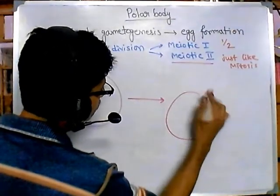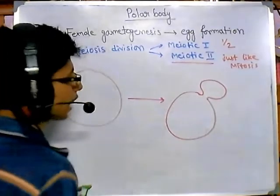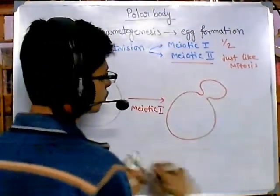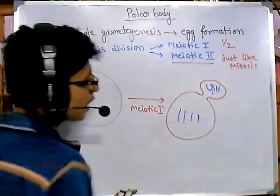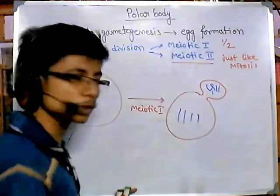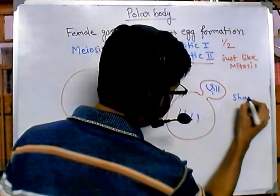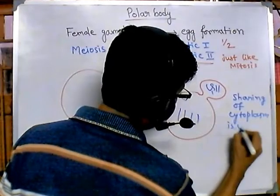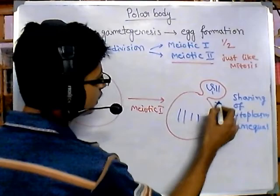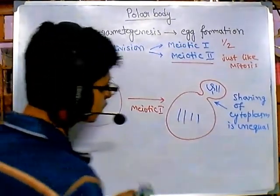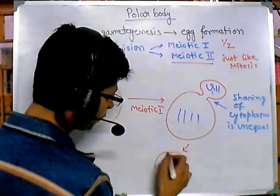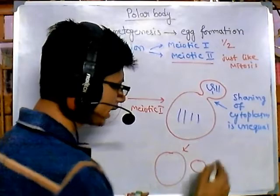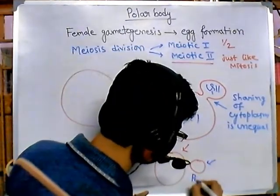So let me draw what happens. Two important segments start to form. One short segment at the end of meiotic 1 cell division. Chromosomes are shared just like the process of meiosis, but sharing of cytoplasm is unequal. So the sharing here is unequal in nature. It produces one large cell with most of the cytoplasm and one small cell with very less cytoplasm. Those small cells having very less cytoplasm are called as polar body — specifically polar body 1, or first polar body, after meiotic 1.